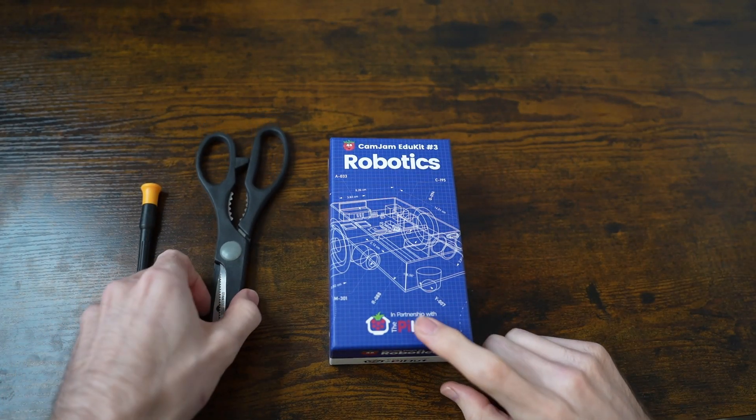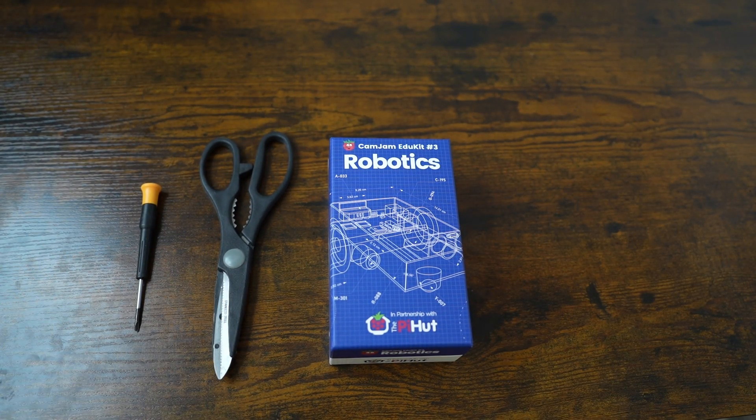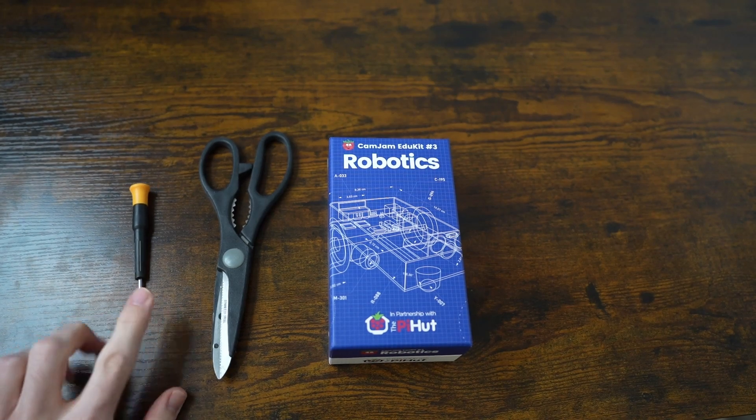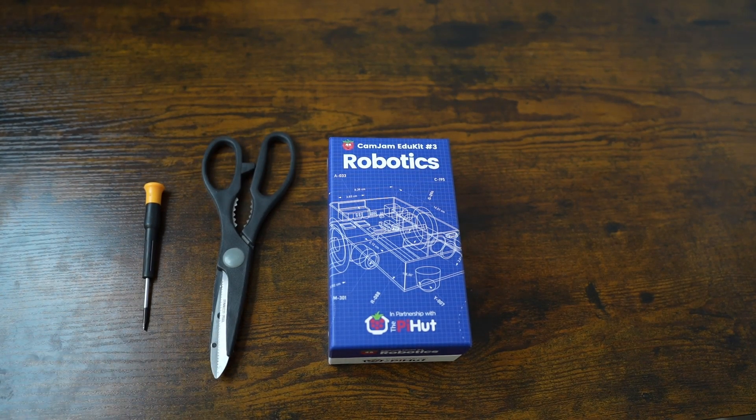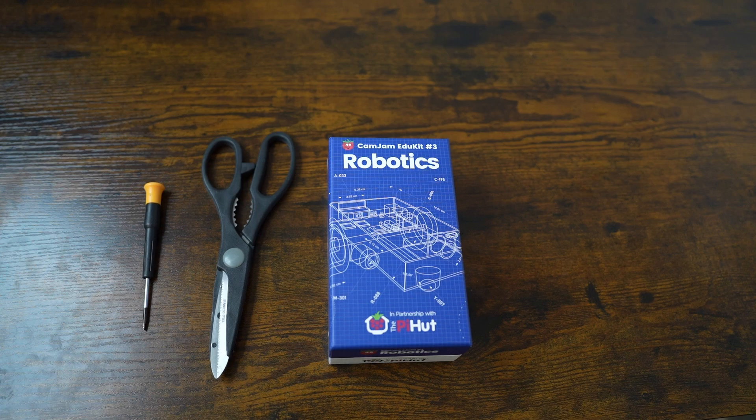In this video, I'll show you how to build the robot kit into a robot with a small Phillips screwdriver, scissors, and the robot kit. You can also use a drill with a 5mm diameter drill bit, although I don't have access to one at this time.